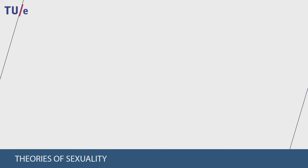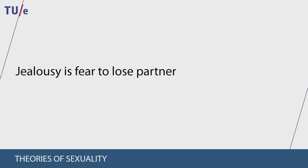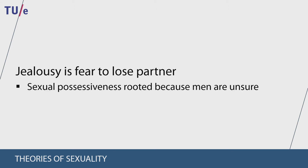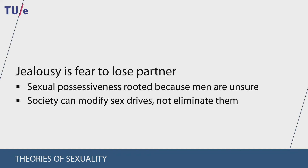Another important concept in sexuality is jealousy — a fear of losing our partners. Several elements can explain where this jealousy comes from. The first is that sexual possessiveness is rooted in our systems, because in the past men could not be sure whether they were the father of their children. By being possessive, they could try to prevent their wives from having children with other men. Current societies can modify the sex drive and make us less jealous, but it cannot be completely eliminated. As such, jealousy seems to be a product of both the person and the situation.